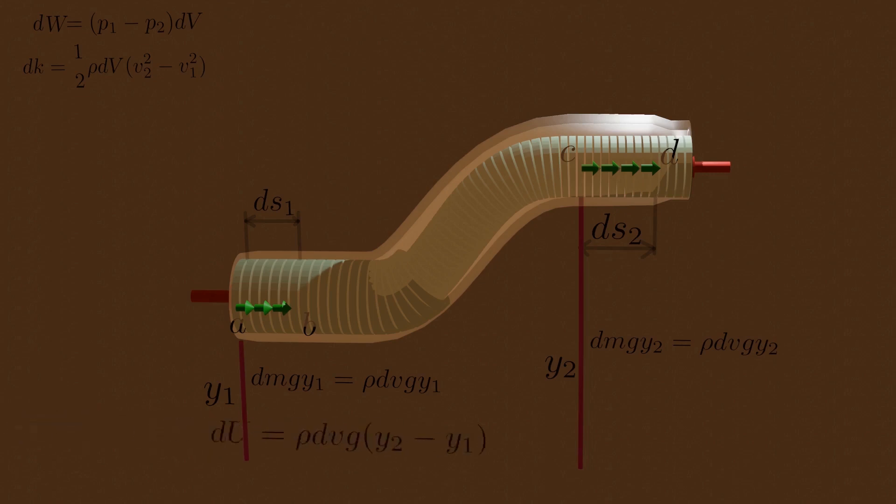Therefore, the net change in potential energy during time DT is just the difference between final value minus initial value.